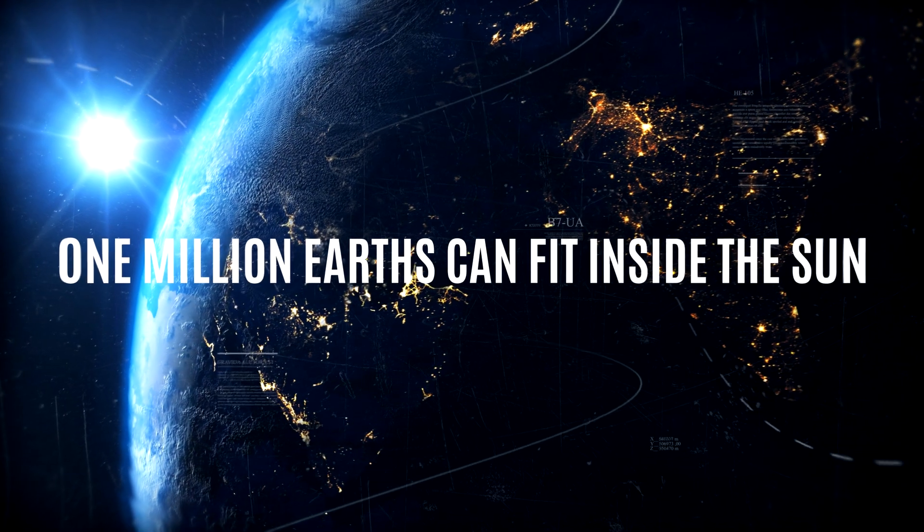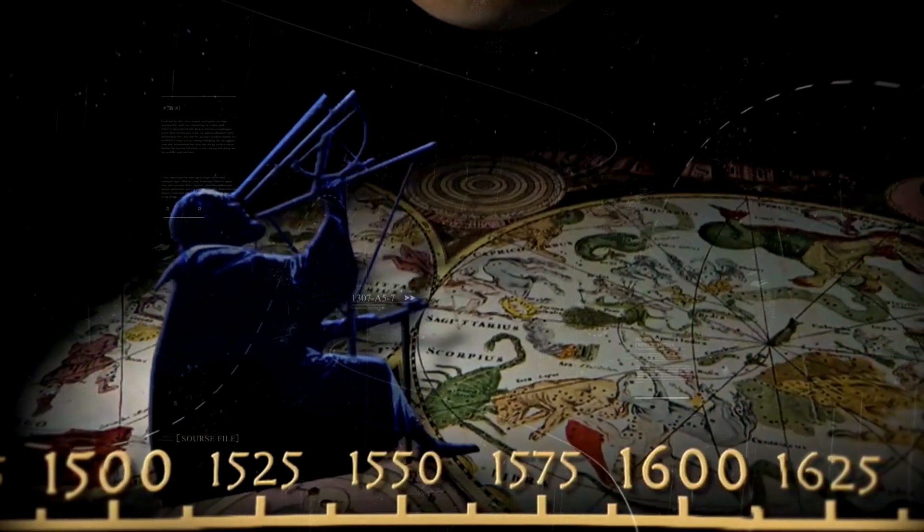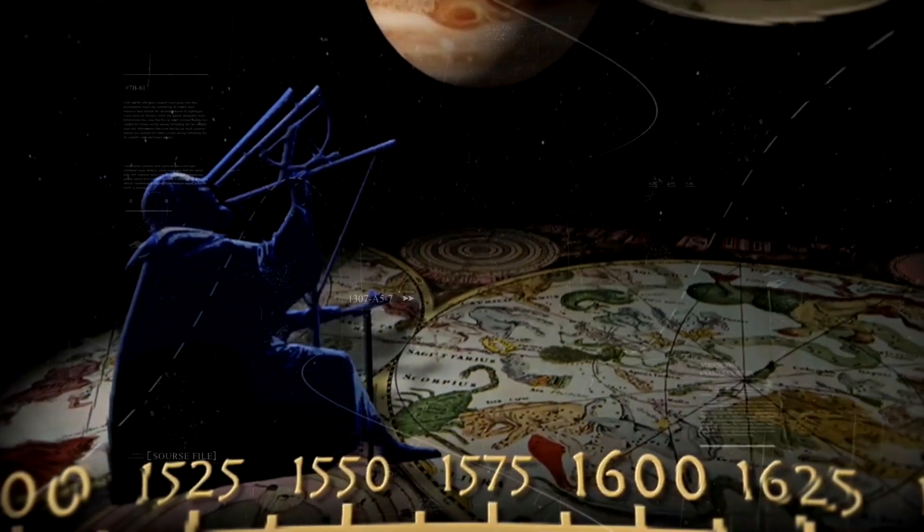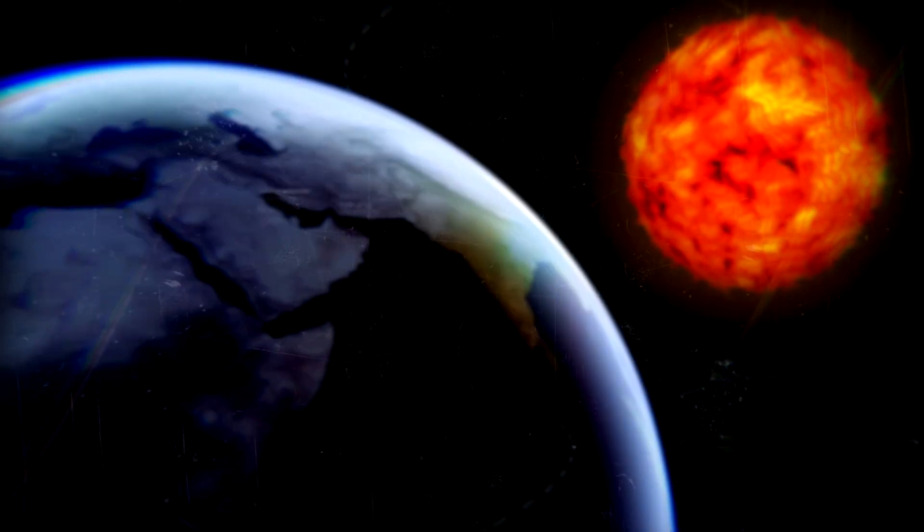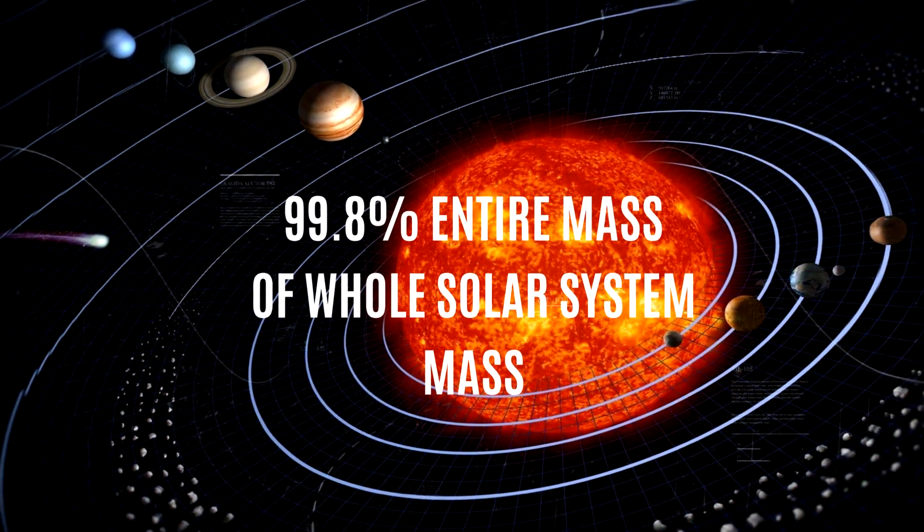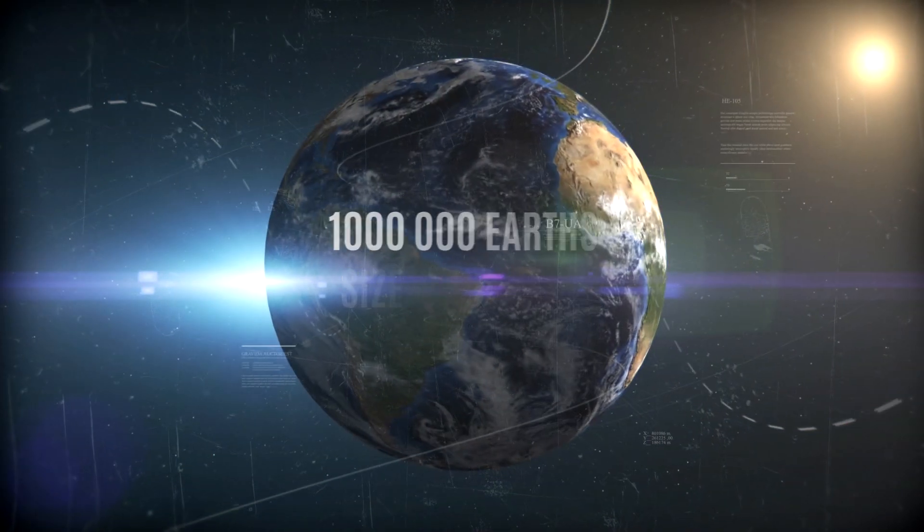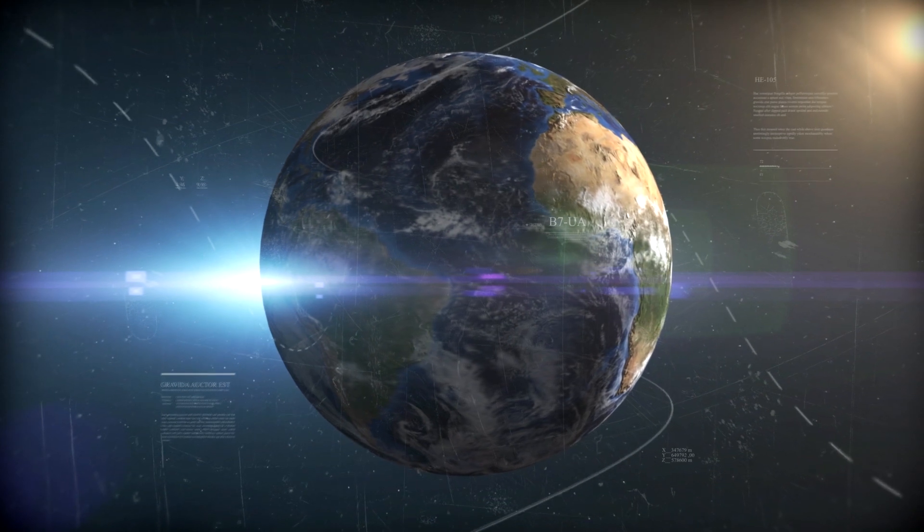One million Earths can fit inside the Sun. Ancient astronomers once believed the Earth was at the center of the universe. But now we know that the Sun is at the center of our solar system, and our planets orbit the Sun. The Sun makes up 99.8% of the entire mass of the whole solar system. One million Earths would be needed to be the same size as the Sun.